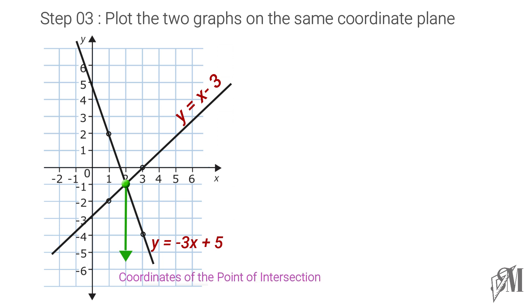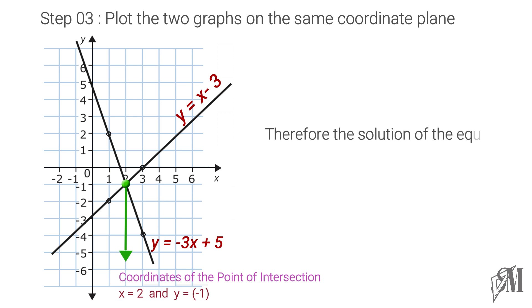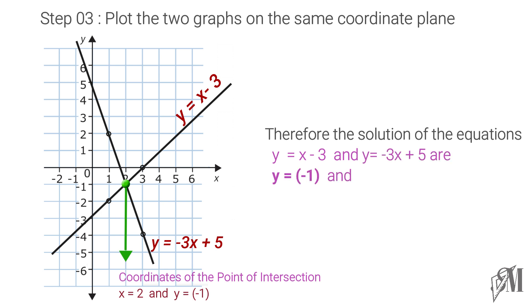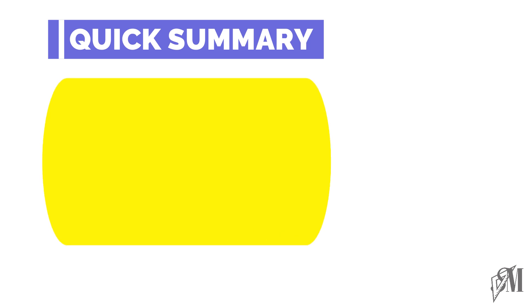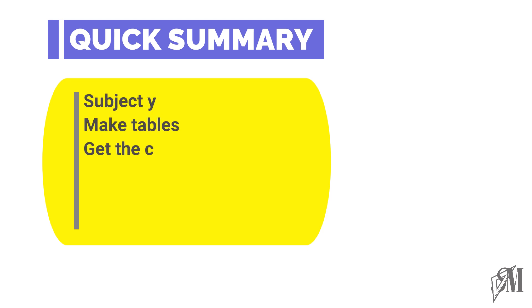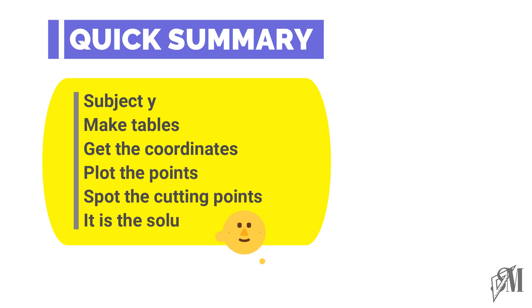The point of intersection gives x equals 2 and y equals minus 1. Therefore, the solution of the equations y equals x minus 3 and y equals minus 3x plus 5 is y equals minus 1 and x equals 2. For a quick summary: in the graphical method of finding solutions of simultaneous equations, all you have to do is make y the subject, make the tables, get the coordinates, plot the points, spot the cutting point — and that is the solution.